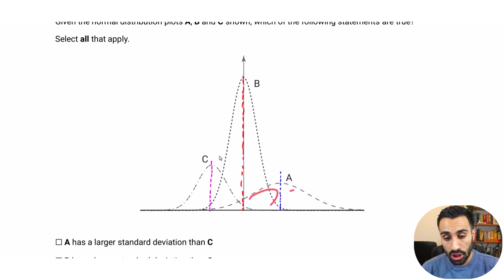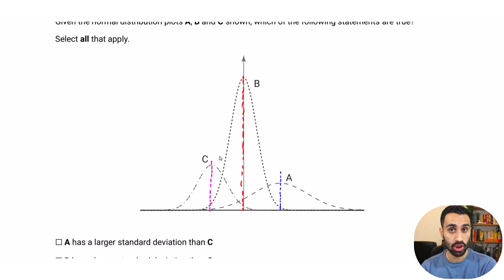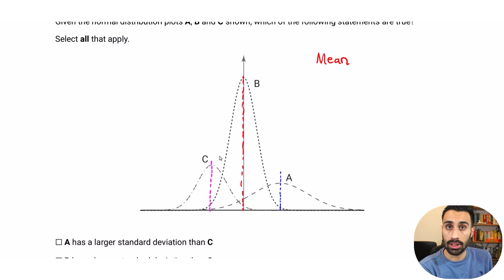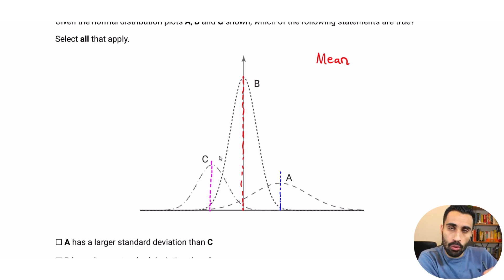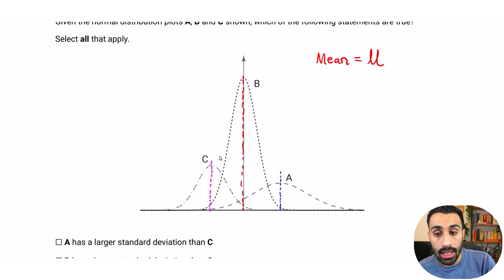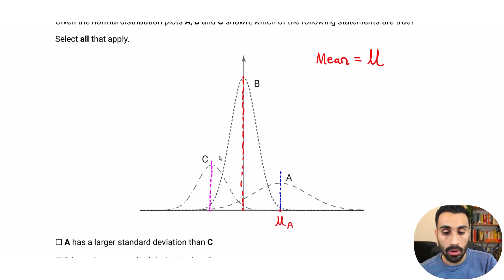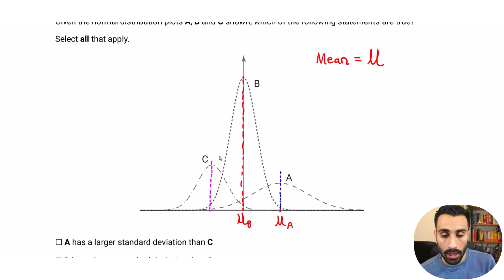The axis of symmetry tells us the right side is symmetric to the left side, and the mean is going to be at that axis of symmetry. The mean — the average — is what we find from test data, like a concrete compression test where we do 30 tests and find the mean. That is the mu value, the population mean. For A, the mean occurs at the axis of symmetry on the x-axis — that's μA. For B and C, the same process applies: right at the middle gives us μB and μC.